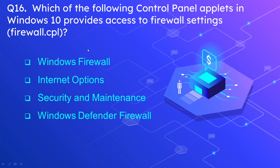Question number 16: Which of the following control panel applets in Windows 10 provides access to firewall configuration? The options are Windows Firewall (firewall.cpl), Internet Options, Security and Maintenance, and Windows Defender Firewall. The correct answer is Windows Defender Firewall.